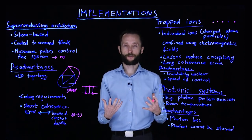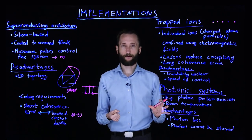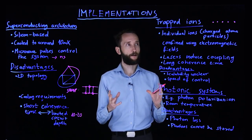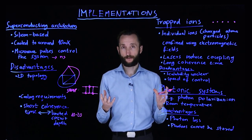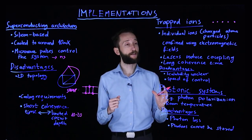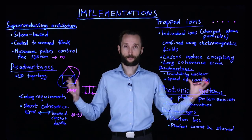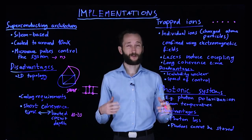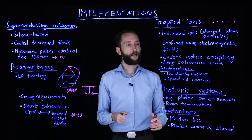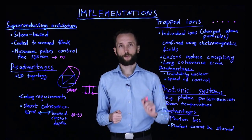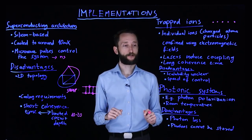But they have their own disadvantages. Scalability is unclear. Recently there are systems up to above 70 qubits using this approach, but it's unclear how well it will scale to larger and larger systems, because we ideally want thousands of qubits. And the speed of control is much slower than in the case of superconducting architectures.